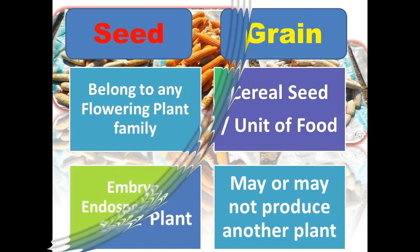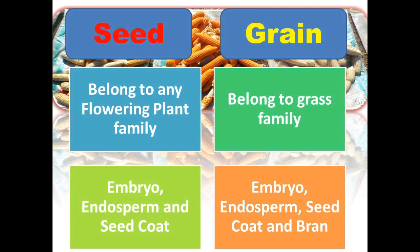Another difference is that seed actually belongs to every flowering plant family. Gymnosperms also produce seed, but those are naked — not covered inside the fruit. But especially we will talk here about the flowering plants, which produce seed. But grain actually only belongs to the grass family.